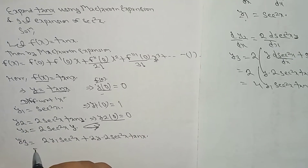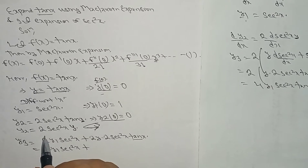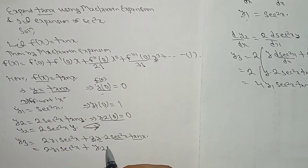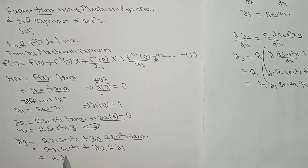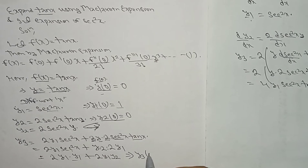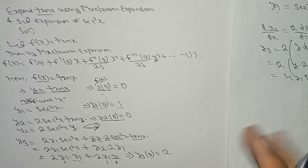So y3 = 2y1·sec²x + 4y·sec²x·tan(x). Since y2 = 2·sec²x·y, and y = tan(x), this simplifies to y3 = 2y1·sec²x + 2y1·y2. Now substituting the known values: y1(0) = 1, y2(0) = 0, so y3(0) = 2·(1)·1 + 2·(1)·0 = 2. So y3(0) = 2.